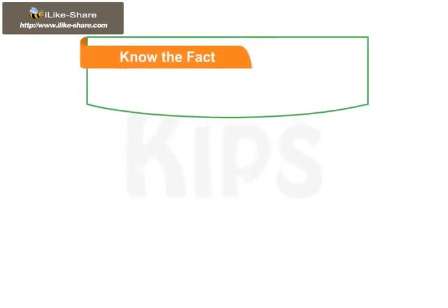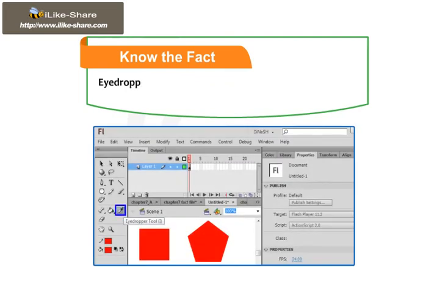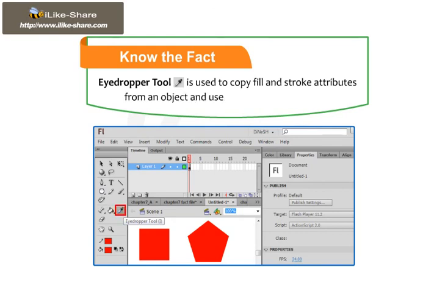Let me now share a fact with you. The Eyedropper Tool is used to copy fill and stroke attributes from an object and use them on another object.